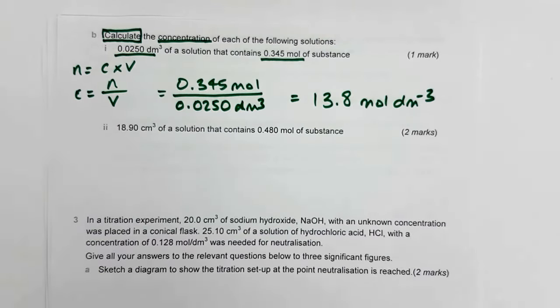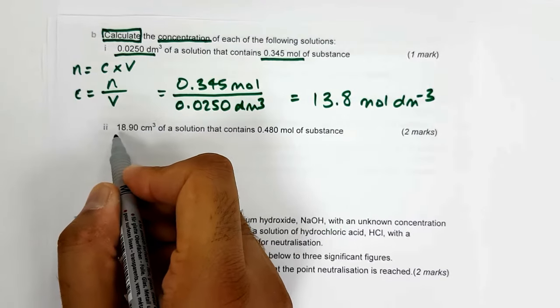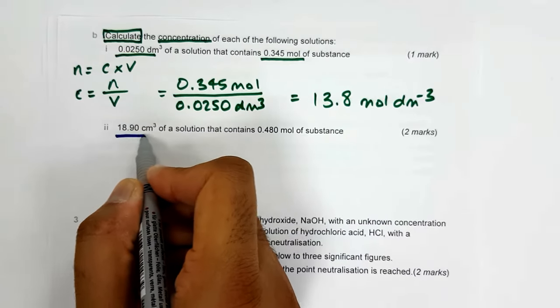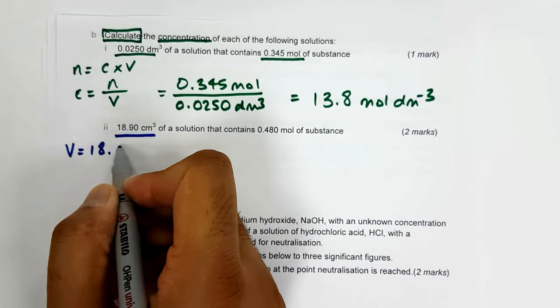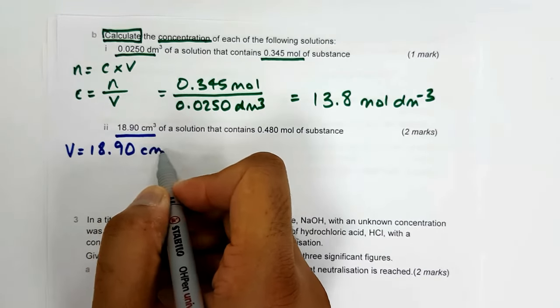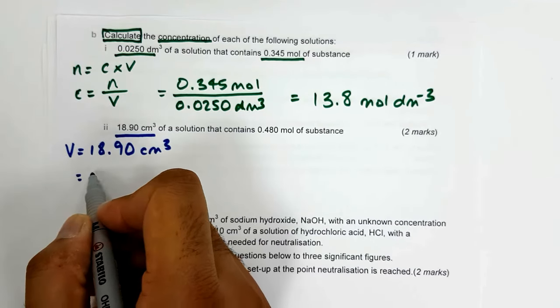Part 2: You have been given 18.90 cm cubed. As you've been practicing, you need to convert that into decimeters cubed by dividing by 1000.